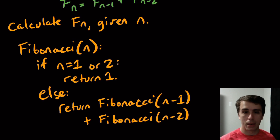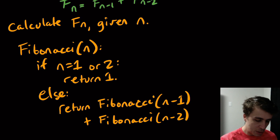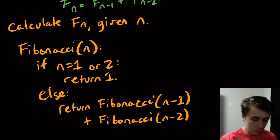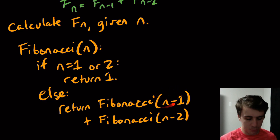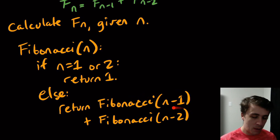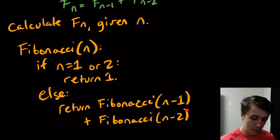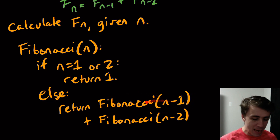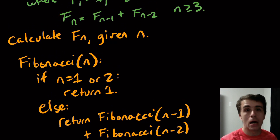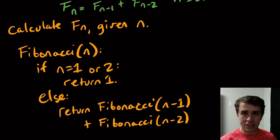Otherwise, for the recursive case, we return Fibonacci(n−1) plus Fibonacci(n−2). This works because we assume the recursion actually works: Fibonacci(n−1) gives us the (n−1)th Fibonacci number and Fibonacci(n−2) gives us the (n−2)th. We add them together, which is exactly the definition of F(n). It clearly does work — it's just horrendously slow.